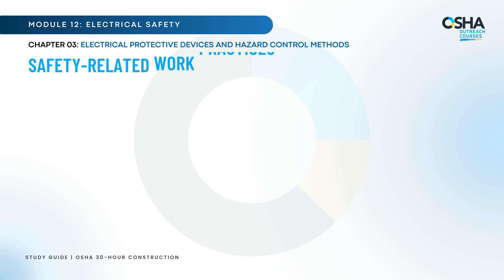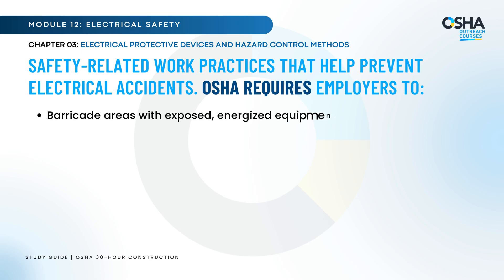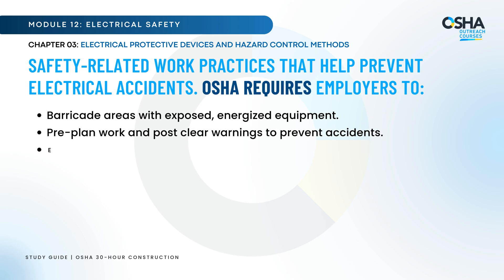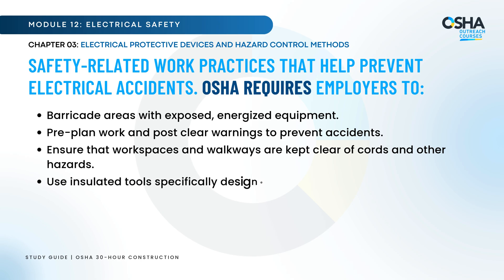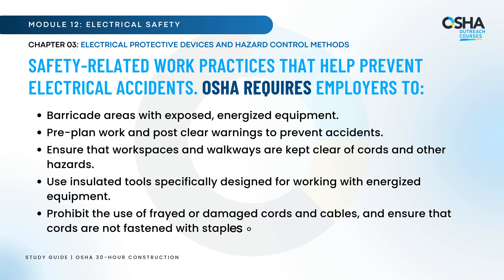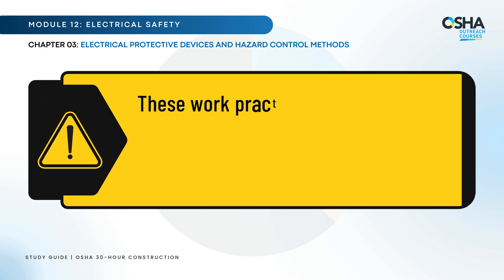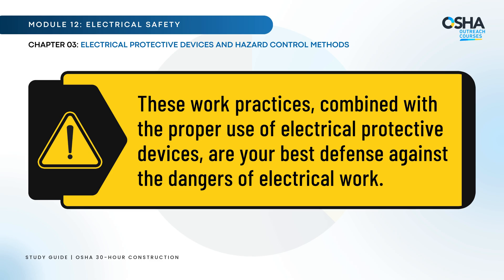Finally, let's talk about safety-related work practices that help prevent electrical accidents. OSHA requires employers to: barricade areas with exposed, energized equipment; pre-plan work and post clear warnings to prevent accidents; ensure that workspaces and walkways are kept clear of cords and other hazards; use insulated tools specifically designed for working with energized equipment; prohibit the use of frayed or damaged cords and cables; and ensure that cords are not fastened with staples or hung from nails. These work practices, combined with the proper use of electrical protective devices, are your best defense against the dangers of electrical work.